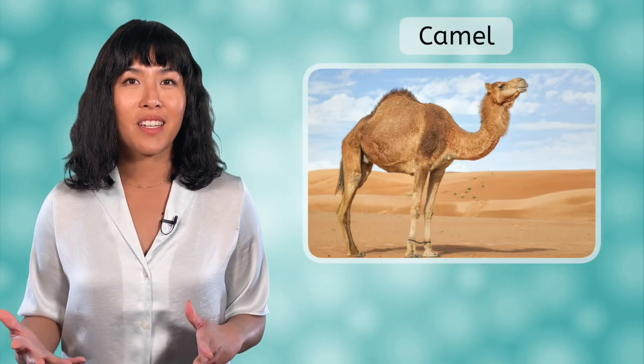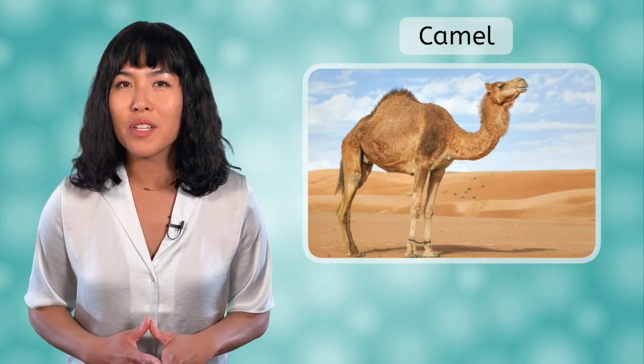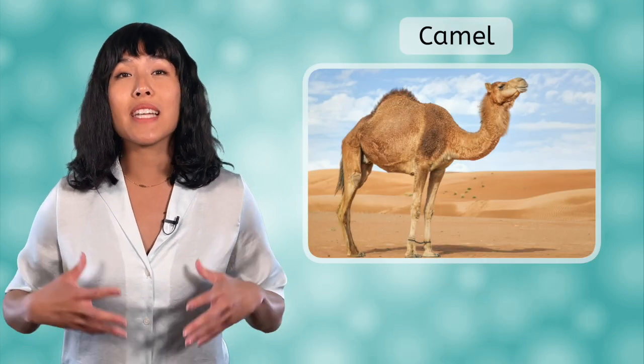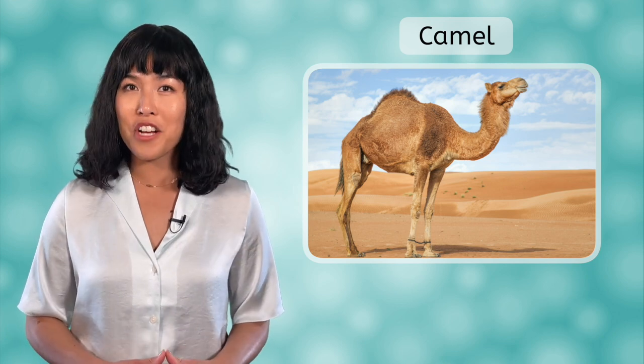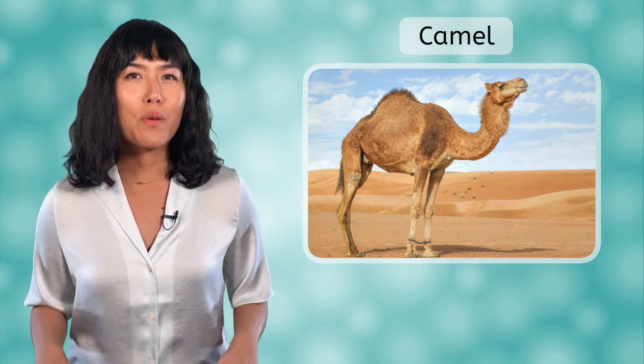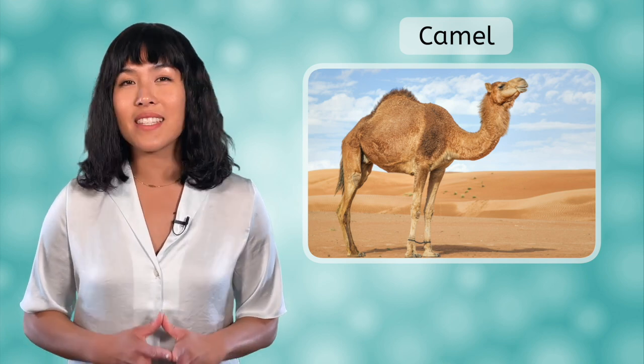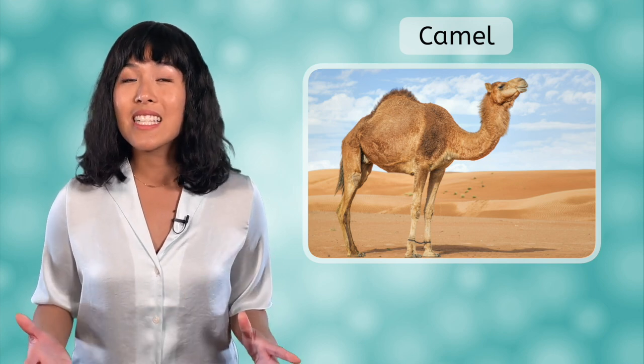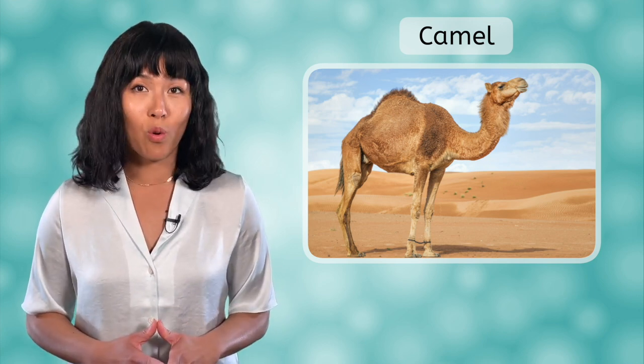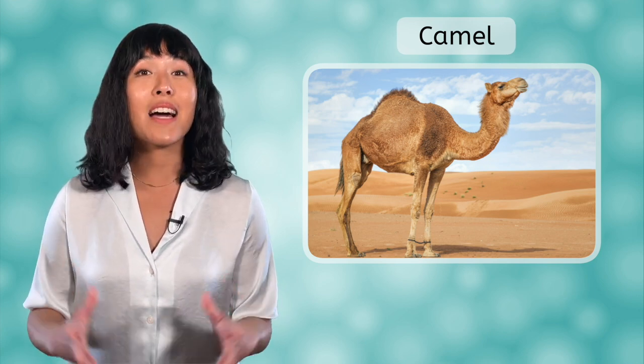The animals that make up class Mammalia are a highly diverse group that can be found all over the world and in every type of habitat, from the frozen Arctic to the hot desert. Through evolution, these animals have been able to adapt to their specific environments. In this lesson, we will be discussing nine of these key characteristics that scientists use to identify organisms as mammals.